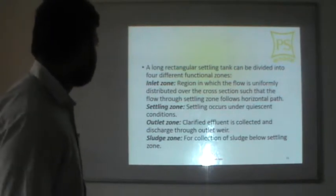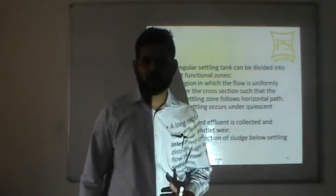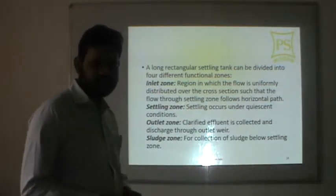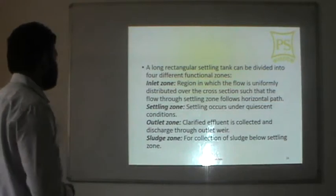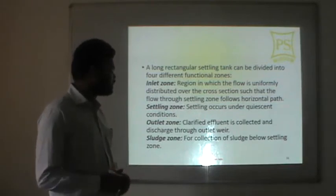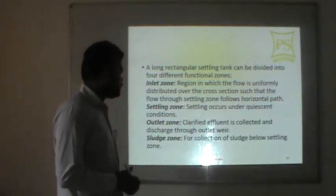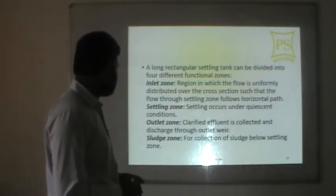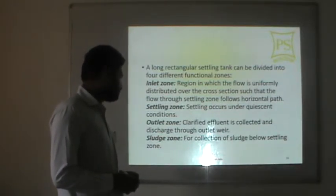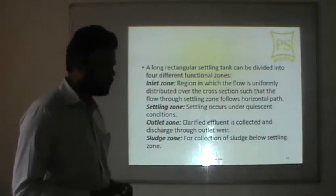A long rectangular settling tank can be divided into four zones. The inlet zone is where flow is uniformly distributed over a cross-section so that flow through the settling zone follows a horizontal path. The settling zone is where settling occurs under quiescent conditions. The outlet zone is where clarified fluid is collected and discharged. The sludge zone is below the settling zone and is for the collection of sludge.